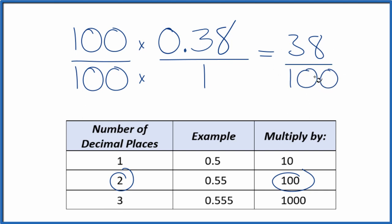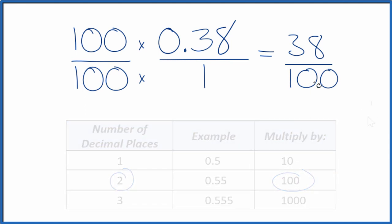So now we have our fraction. But we can simplify this to lower terms. Let's give ourselves some room. So we can divide 38 and 100 by 2, both of them by 2 since they're even numbers.